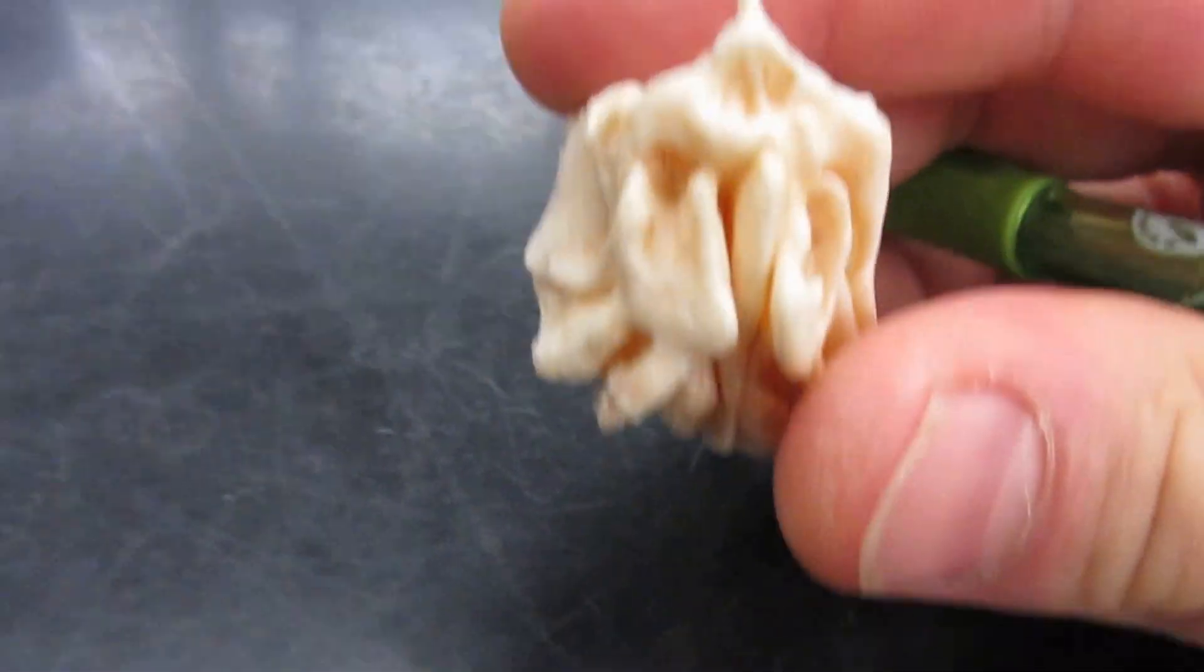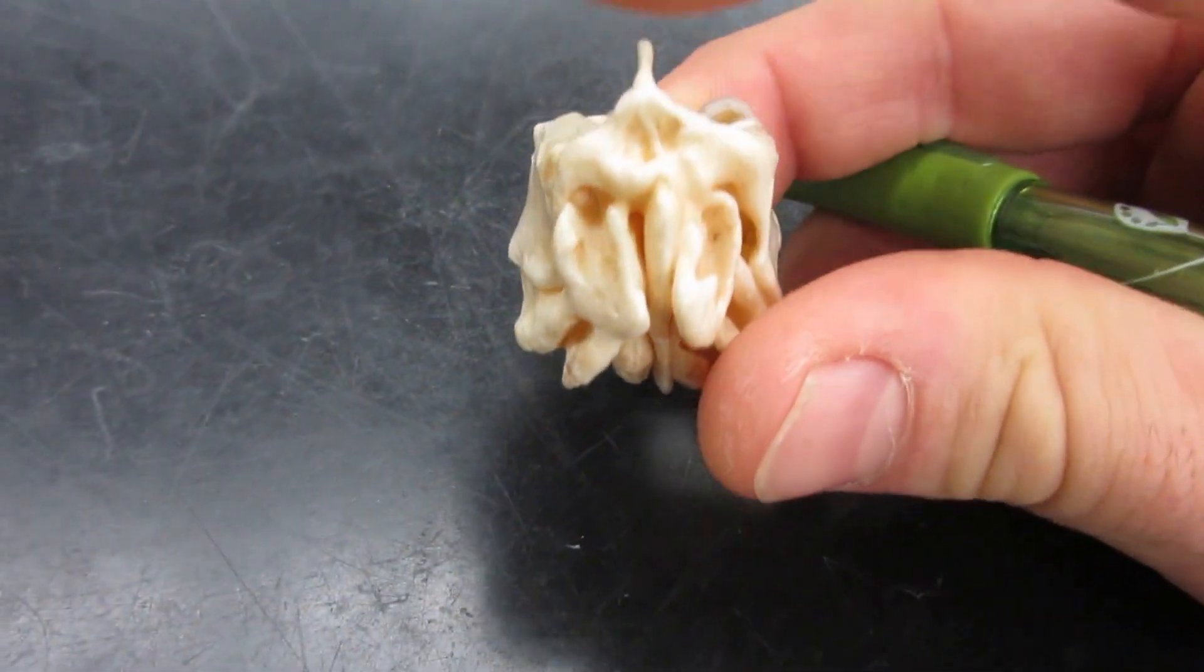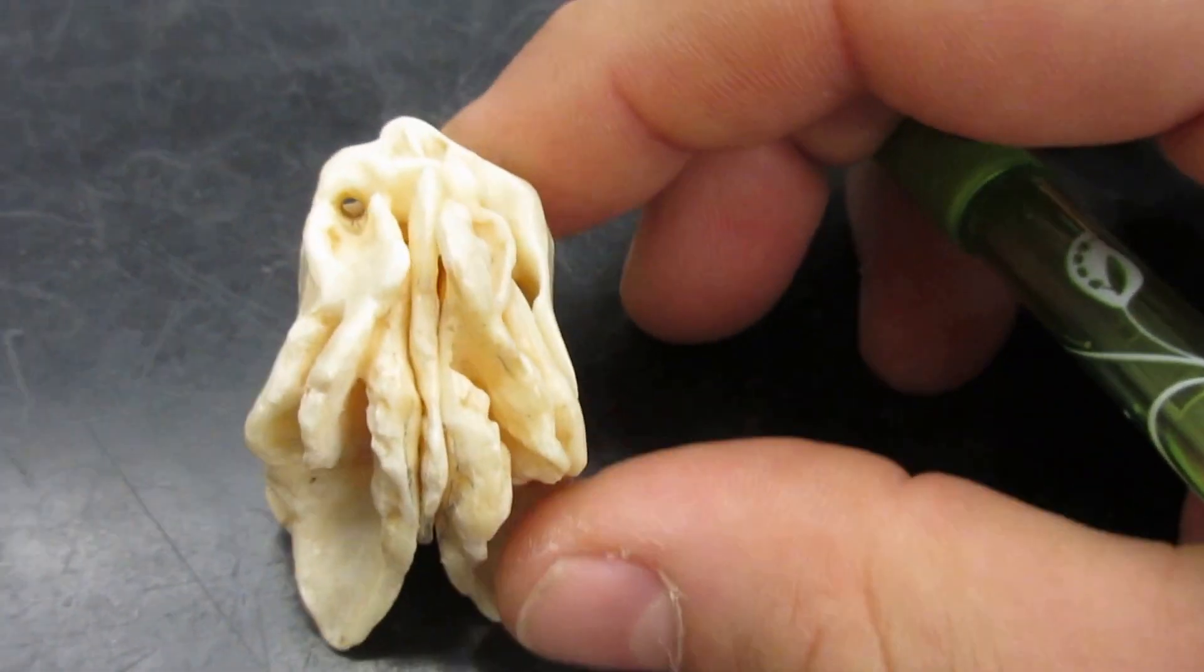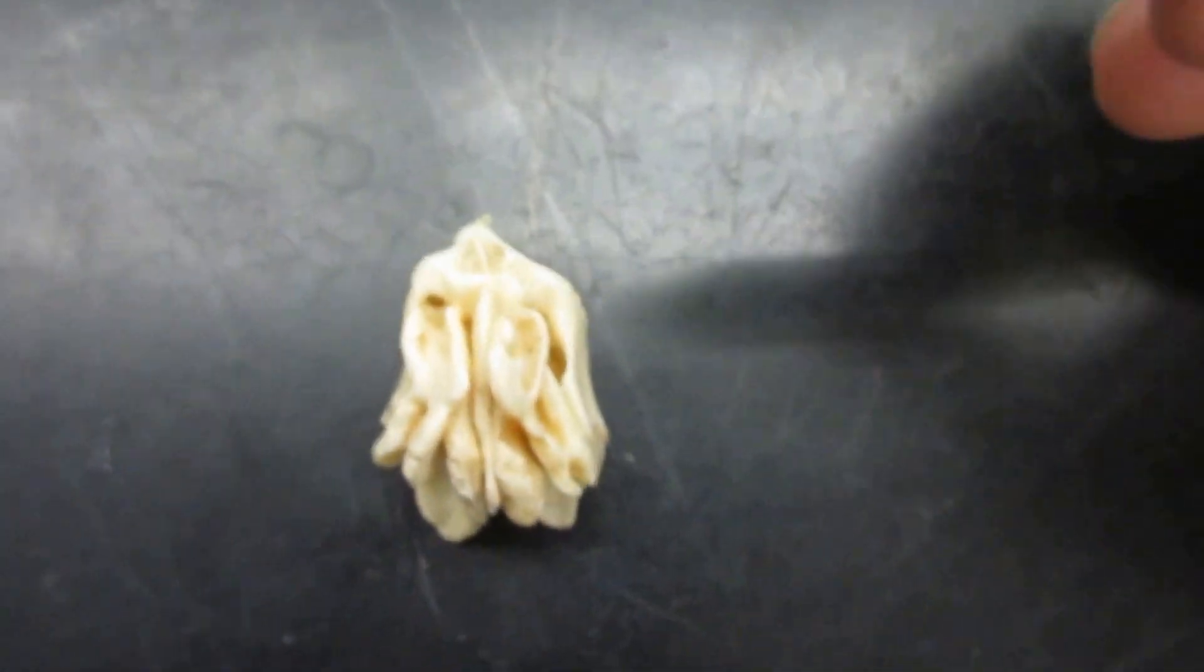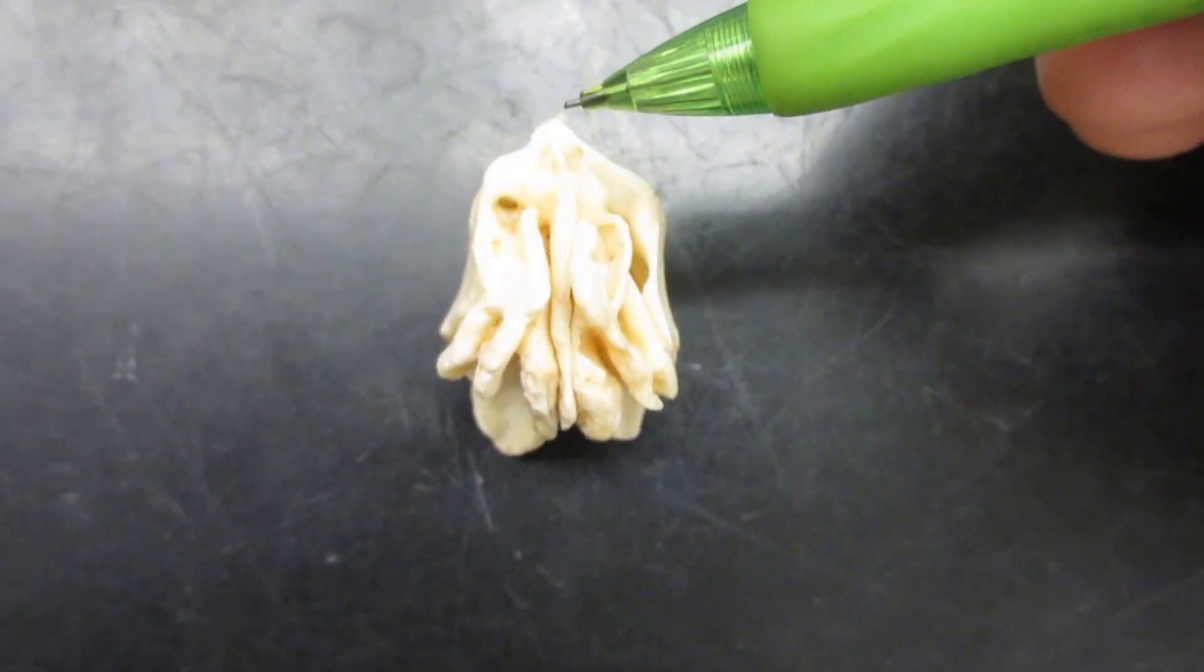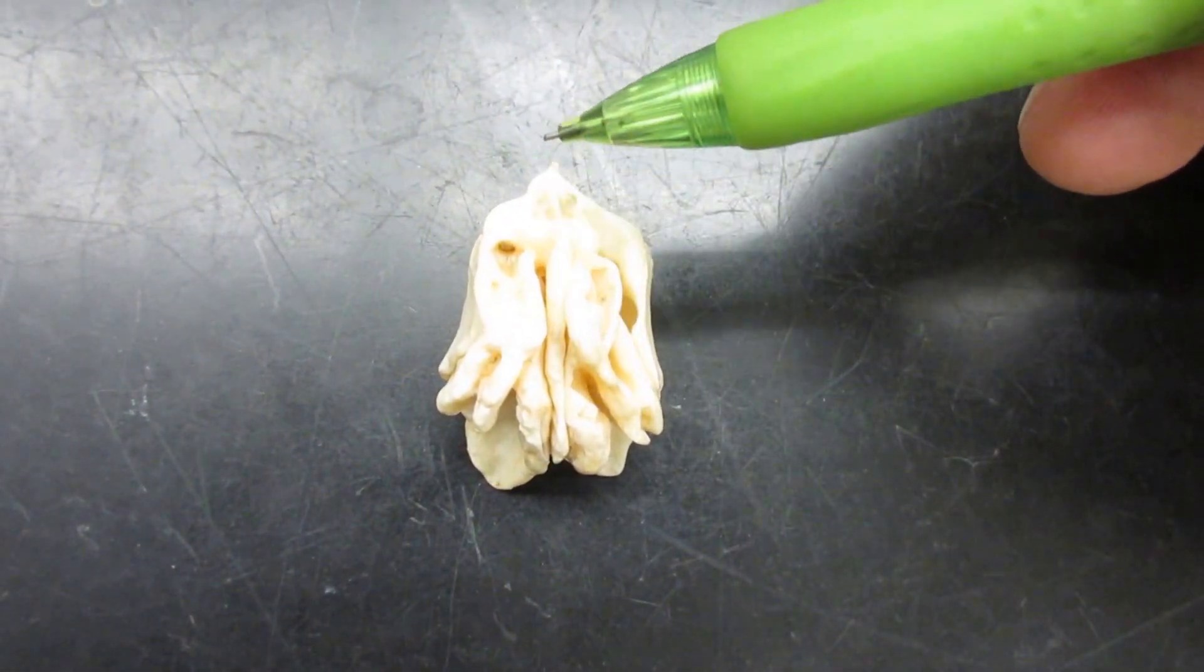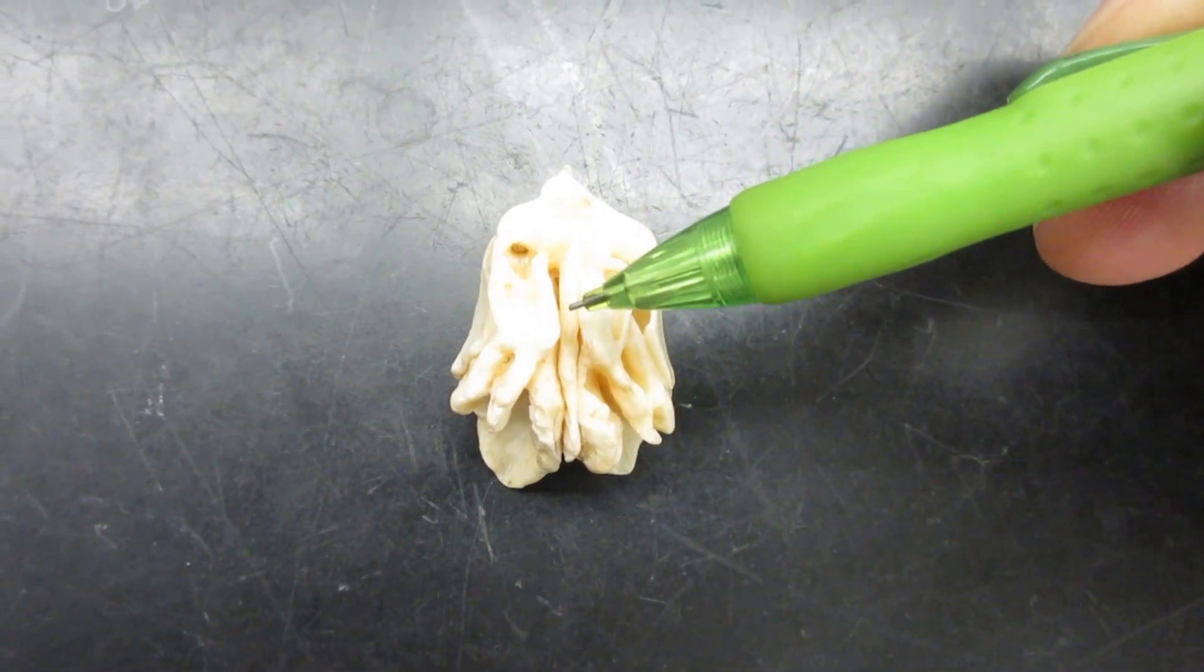When you're looking at the ethmoid from the front, you can see the crista gala rises up—this little point right here. In line with the crista gala is a perpendicular plate. If you continue down from the crista gala, that's the perpendicular plate, which is forming part of your nasal septum.